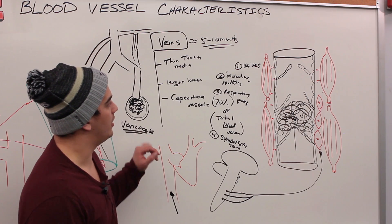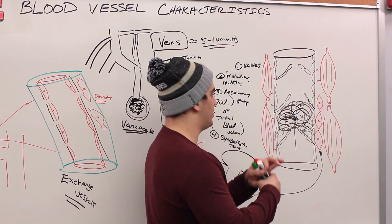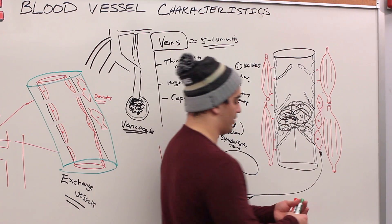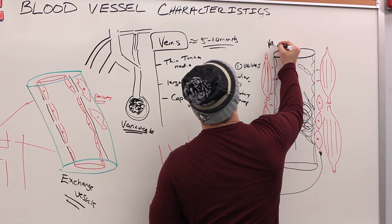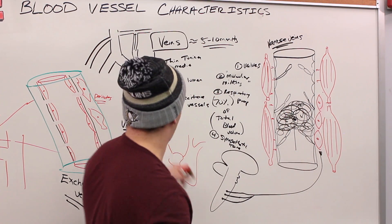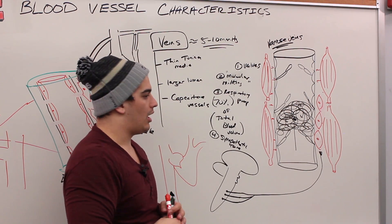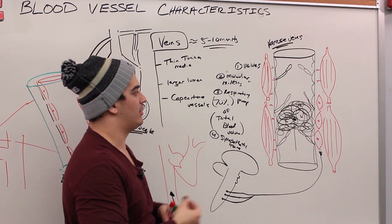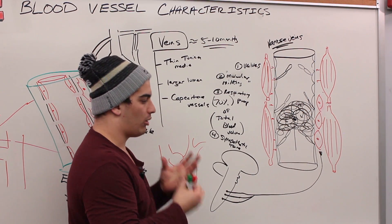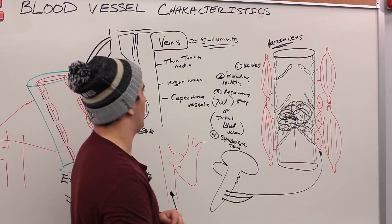Varicose veins don't only occur in the legs or testes. Another common location is the veins of the anus, called hemorrhoidal veins. Due to high pressure from straining, forcing a bowel movement, or performing the Valsalva maneuver, pressure accumulates and those veins become varicose. This condition is called hemorrhoids, which is another example of varicose veins.